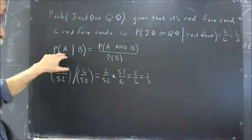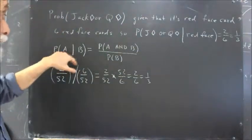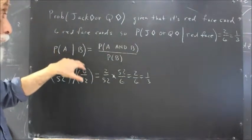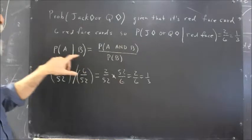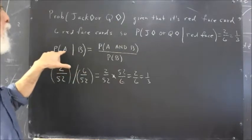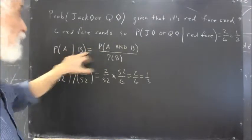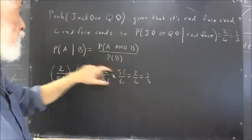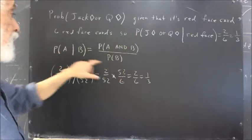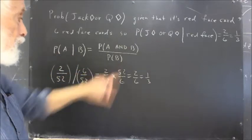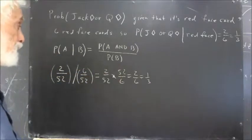Probability of Jack or Queen of Diamonds given red face card. So it's the probability of Jack or Queen of Diamonds and red face card, divided by the probability of a red face card.